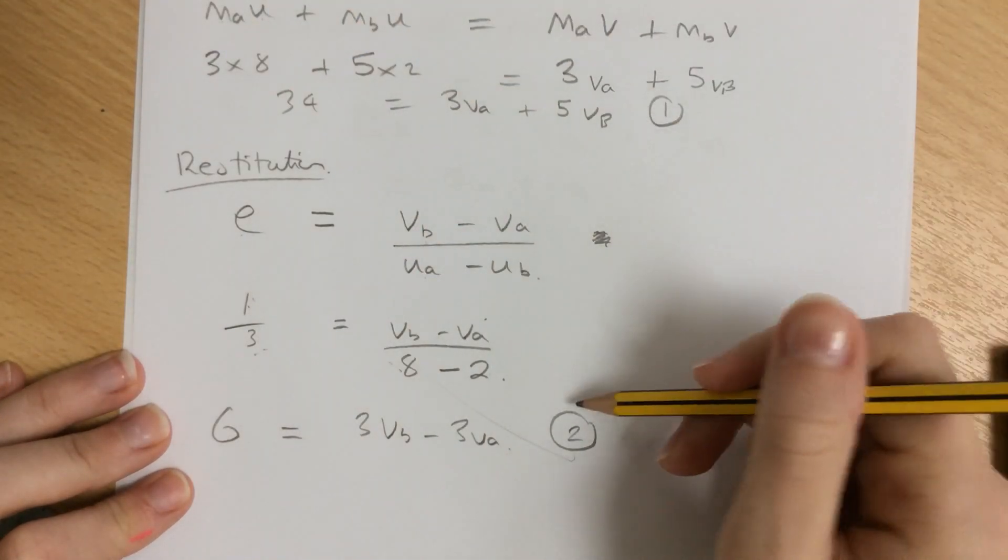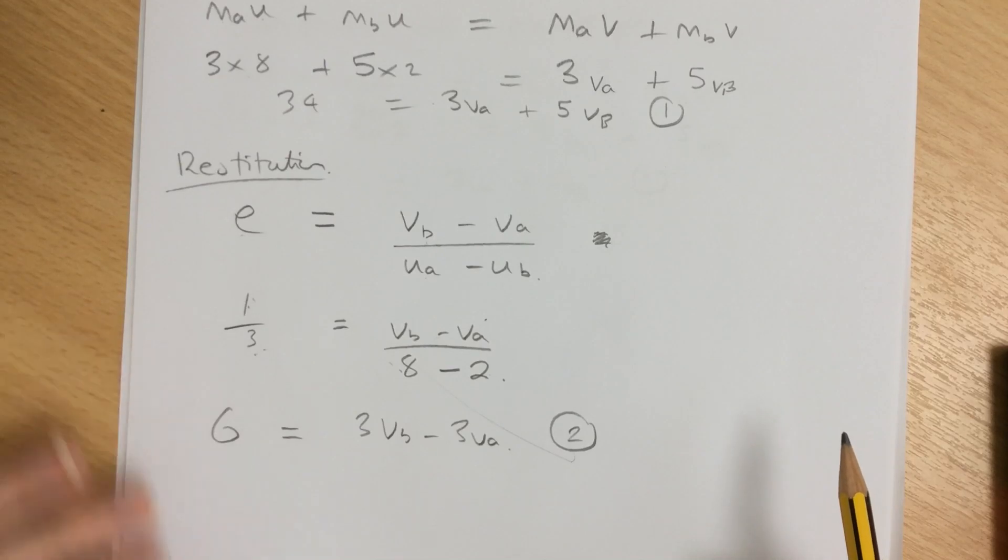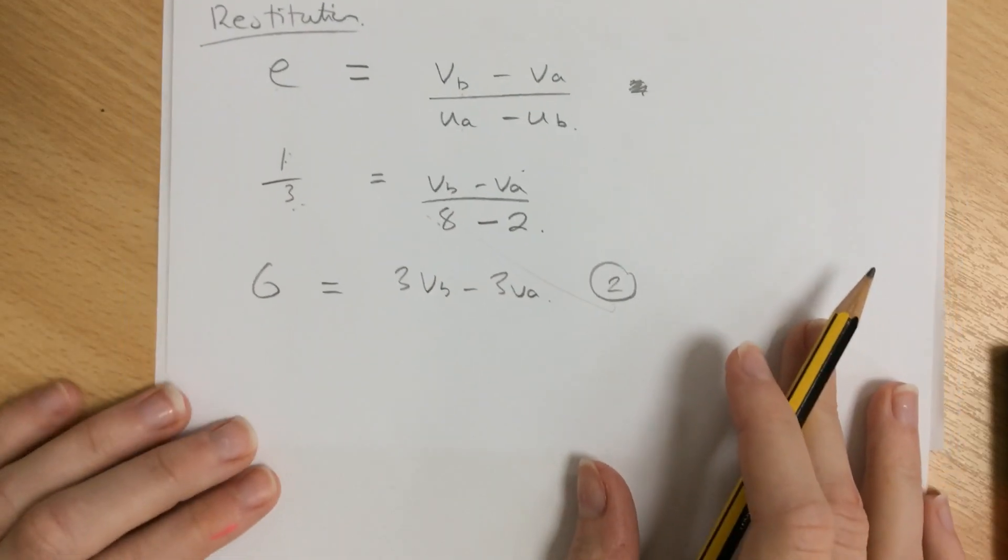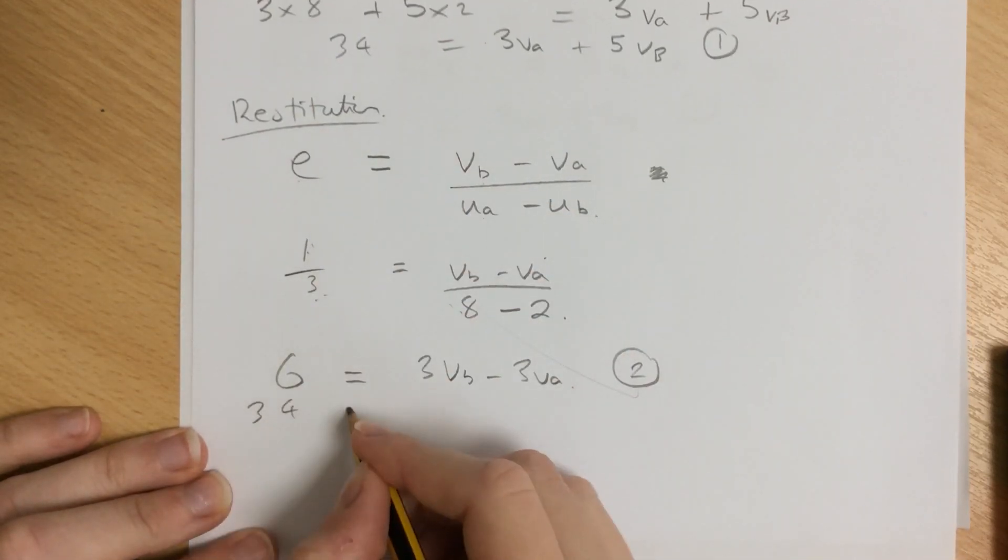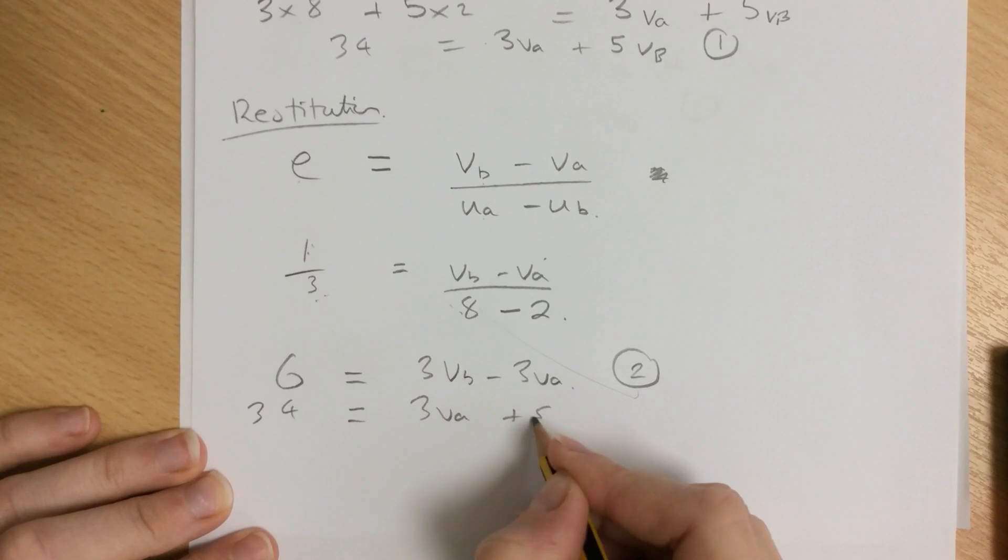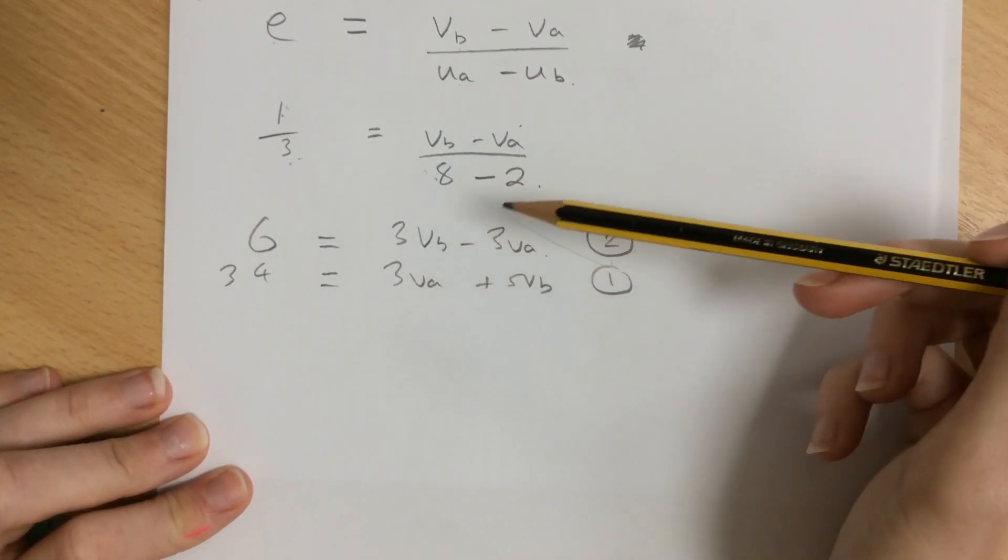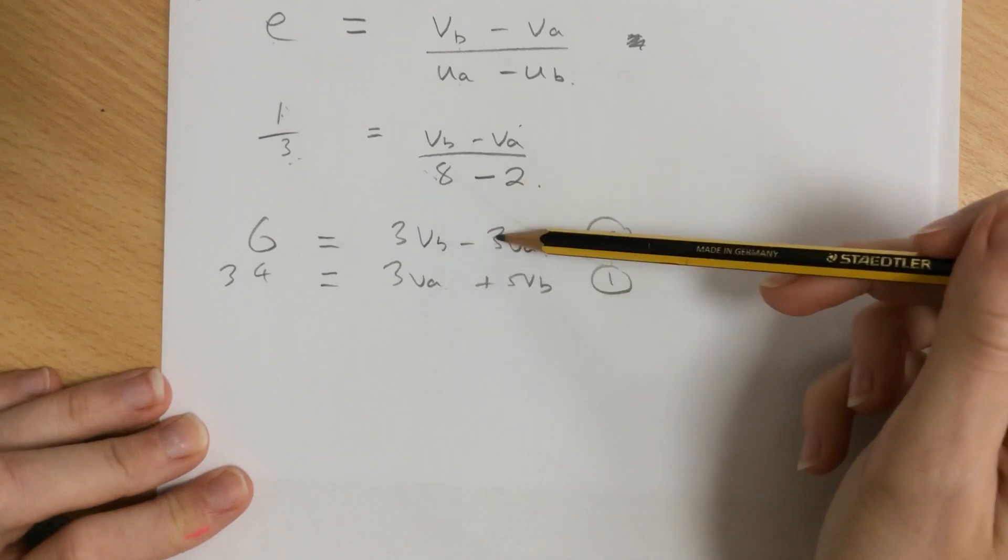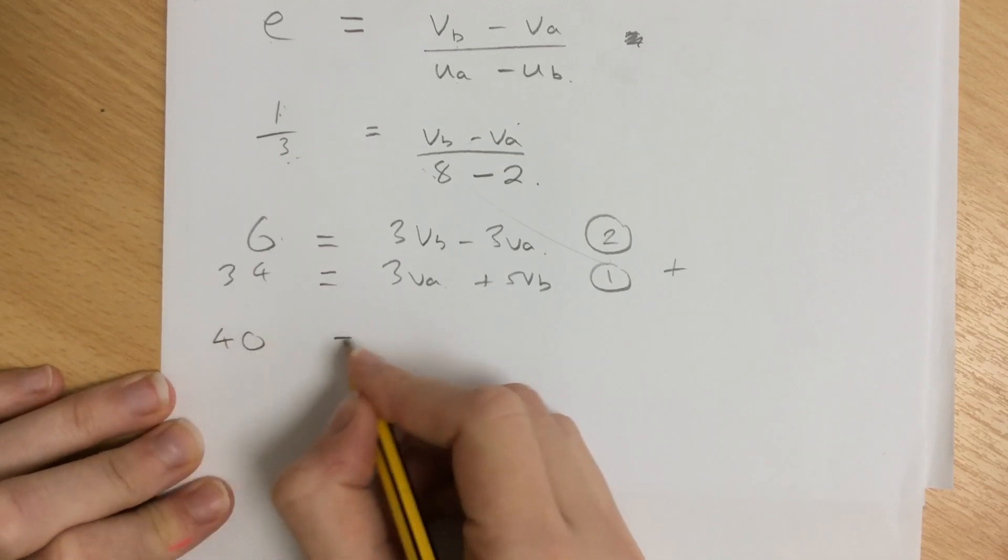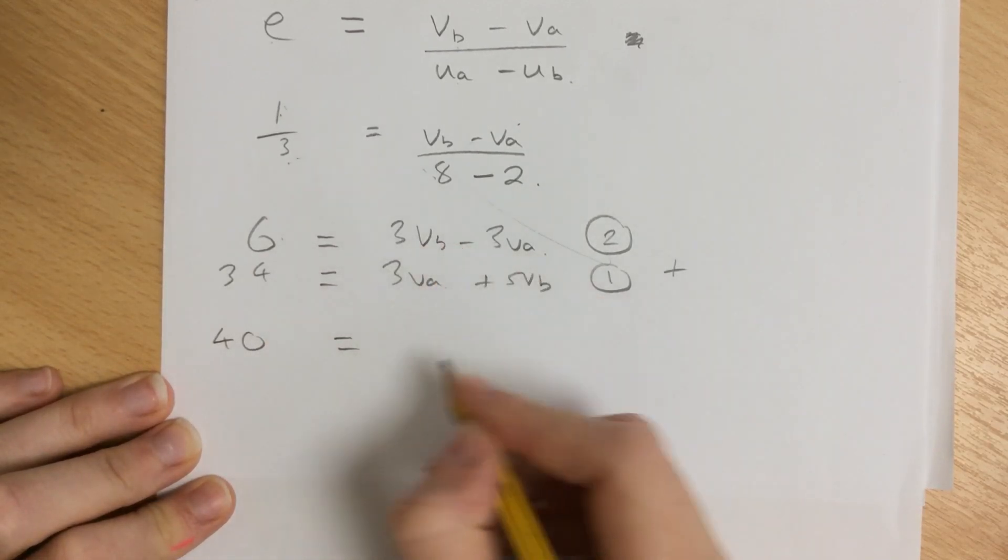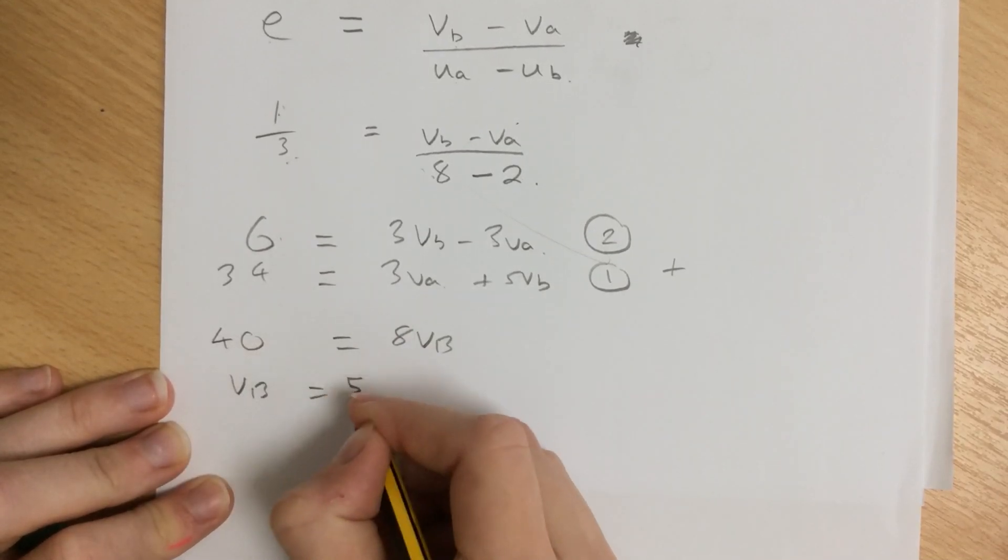Now we have two equations to solve simultaneously. Looking at both equations, the VAs have different signs, so we add the equations. Adding gives us 40 equals 8VB. The VAs cancel out, and 3VB plus 5VB equals 8VB. So VB divided by 8 is 5.